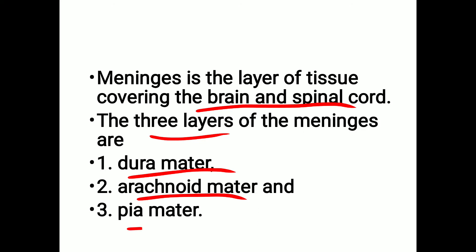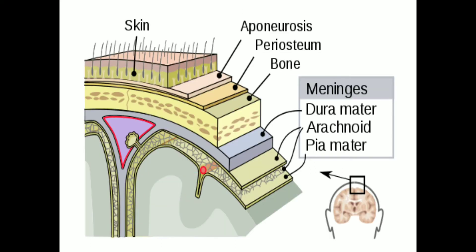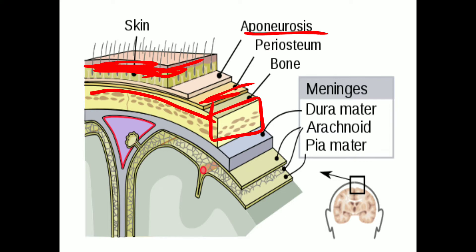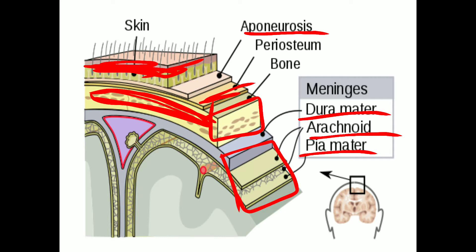The first layer is dura mater, the second is arachnoid mater, and the third is pia mater. Superficially on the head there is a layer of skin, below that is the aponeurosis connecting the muscles, then the periosteum which is the outer layer of the cranial bone. Below that are the three layers of meninges: dura mater is the outermost, arachnoid mater is in the middle, and pia mater is the innermost layer adherent to the brain.